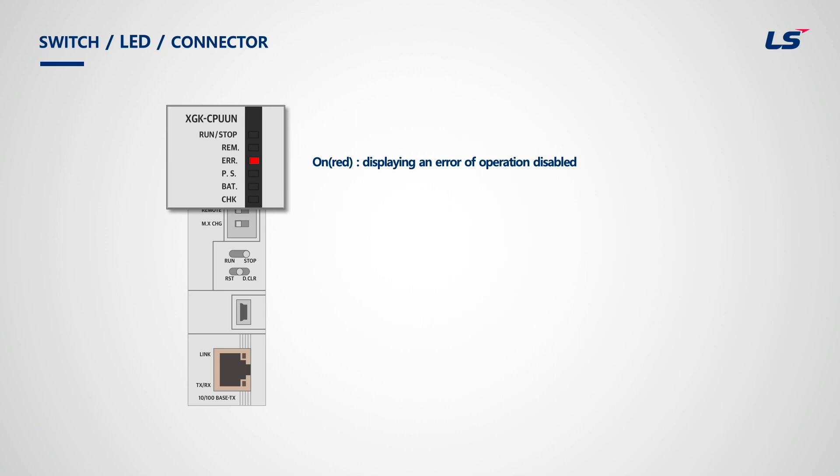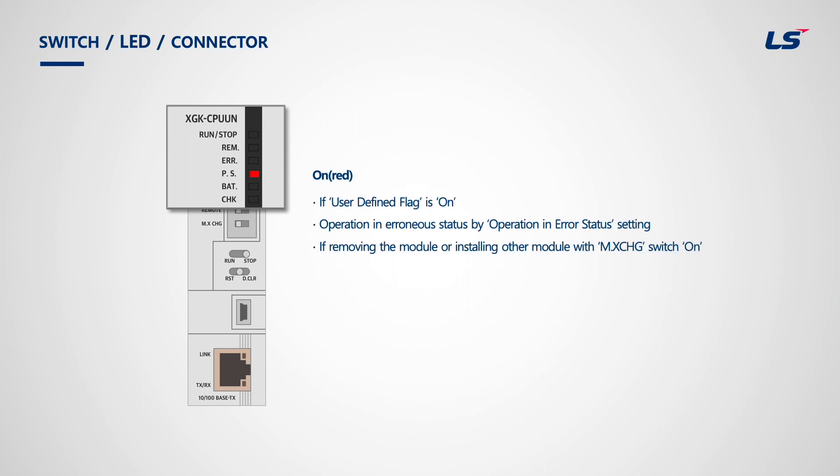Users can find error details in the XG5000 record. Next is the Programmable Status LED. It turns on at special occasions, such as when a user-defined flag is on, or when the PLC is running in an erroneous status due to the Operation in Error Status setting.